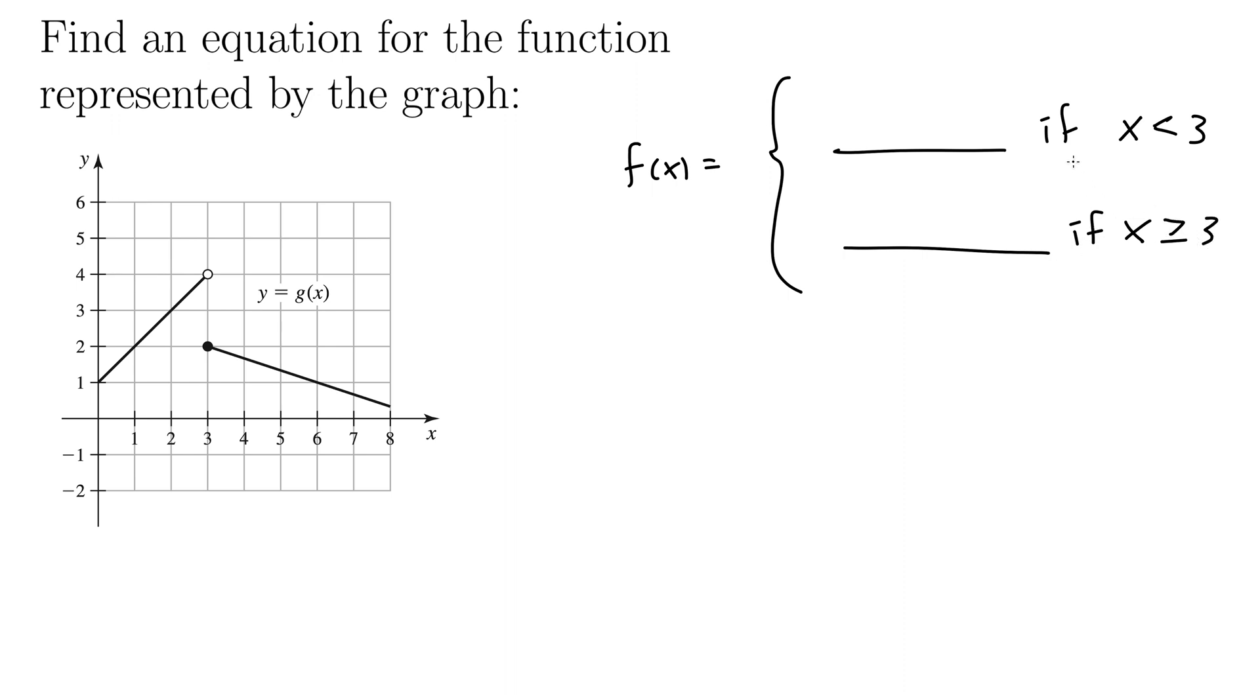So we just need to figure out what these two things are and we know they're both going to be lines because we can tell by the picture that they're both lines. So we will use the equation for a line, y equals mx plus b. If you recall that m is the slope and b is the y intercept.